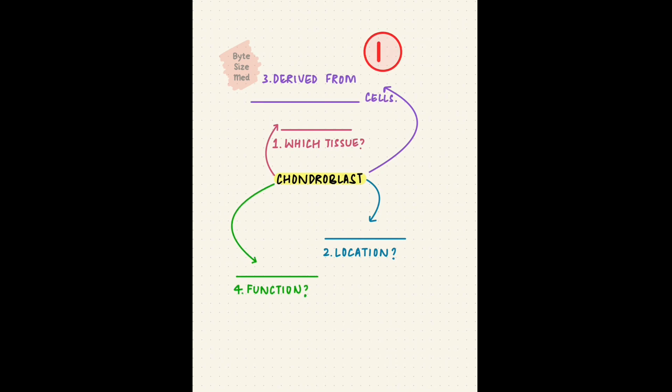Next we'll look at another special cell, the chondroblast. Your task for this is to recall which tissue has chondroblasts. Where in this tissue are these cells located? Which cell forms a chondroblast? And what does it do? You can pause the video here and take as much time as you need for recall. But I just get one minute, so time's up.